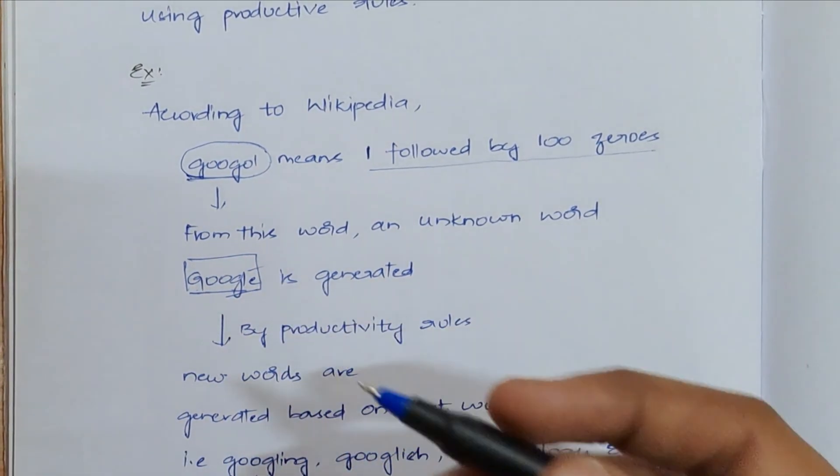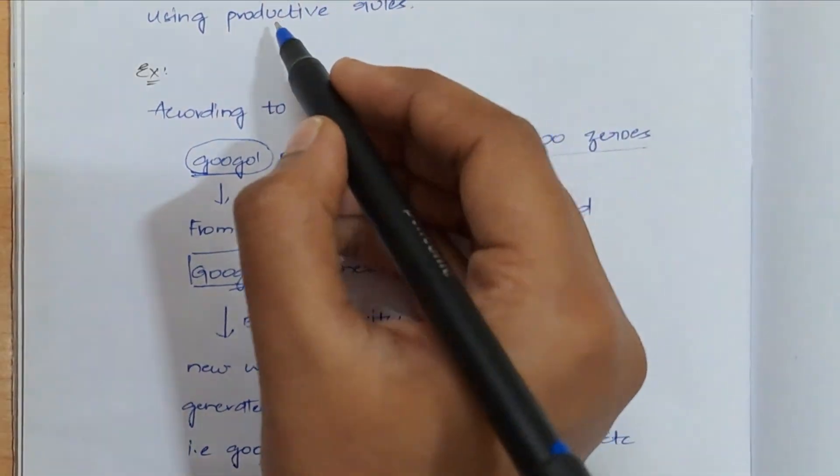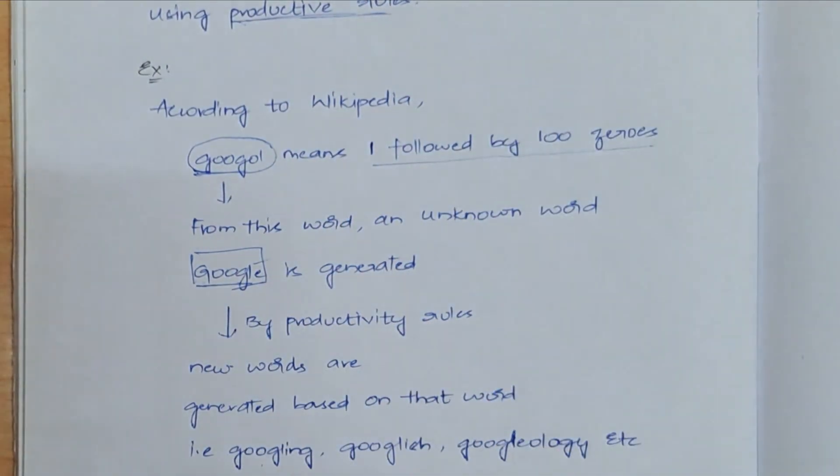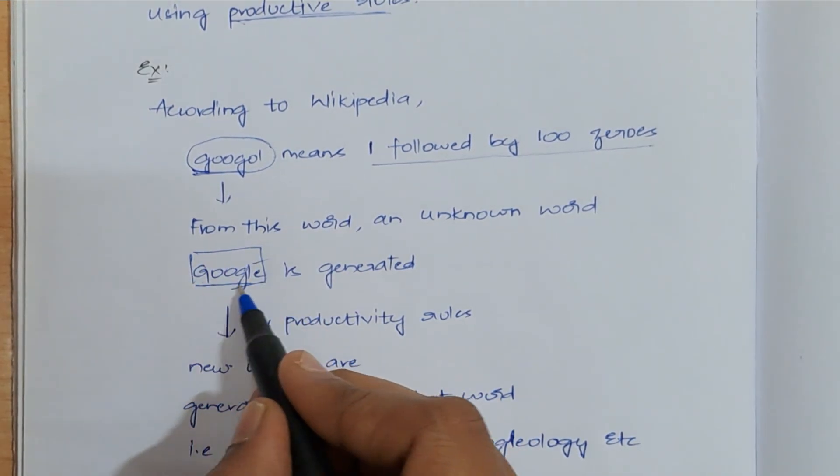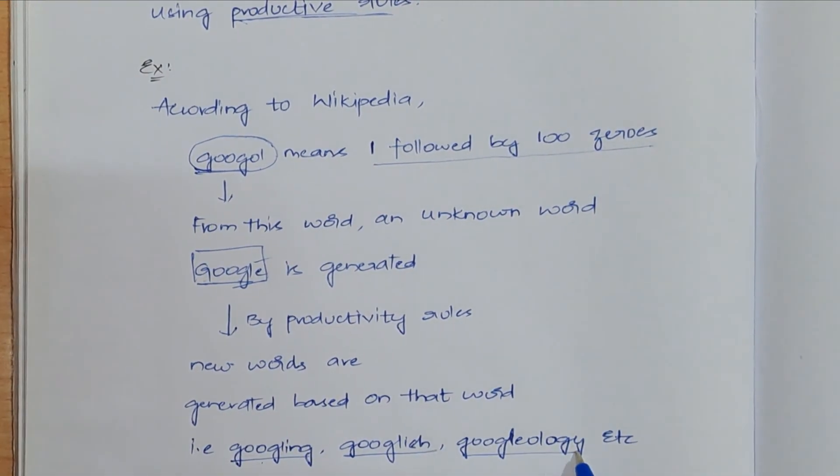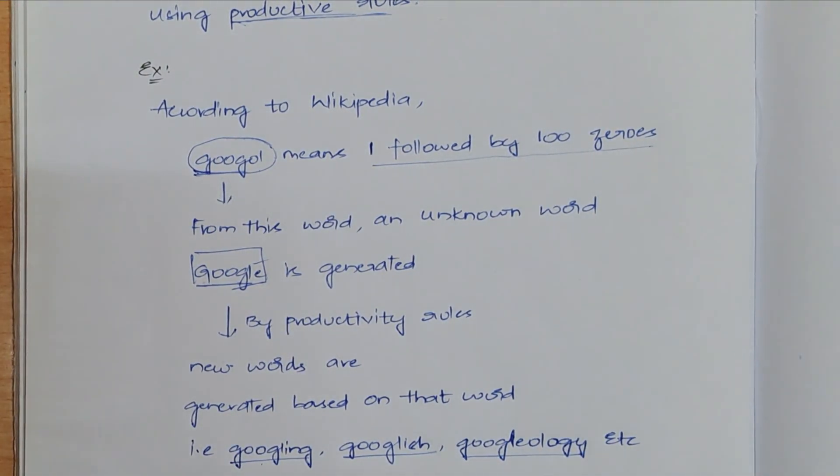At that time, Google was some unknown word. It doesn't have any meaning. What they have done is by using some productivity rules, they have formed new words from this Google. What are those new words? Googling, Googlish, Googleology are nothing but the new words which are formed by productivity rules.